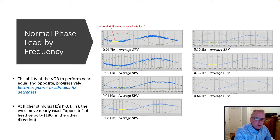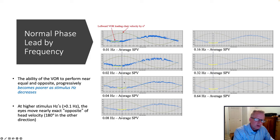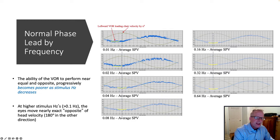This phase lead is generally only seen for lower frequencies — below about 0.04 Hz. At 0.04 Hz, the response is fairly well timed. But certainly for 0.02 and 0.01 Hz, there's definitely a phase disparity between eye response and head response.